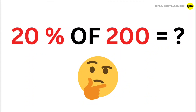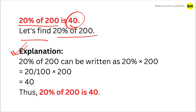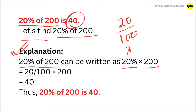Let's find 20% of 200. 20% of 200 can be written as 20% multiplied by 200. 20% can be written as 20 upon 100. So we have 20 upon 100 multiplied by 200.